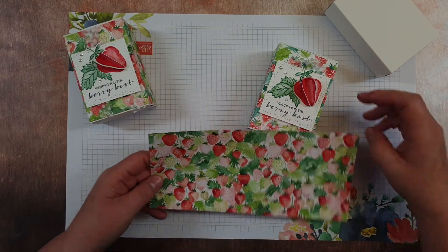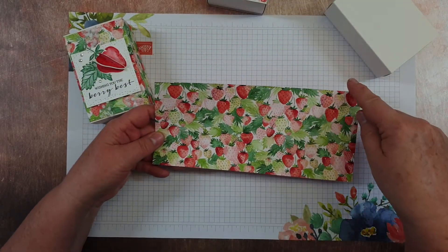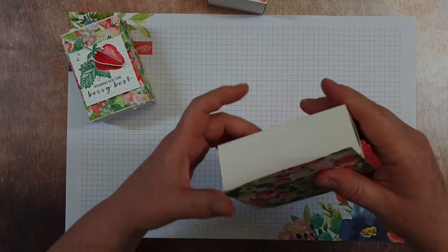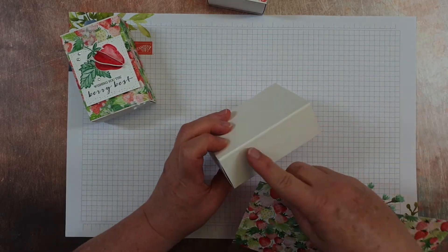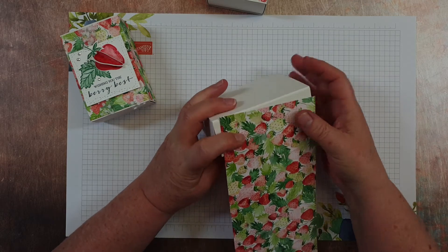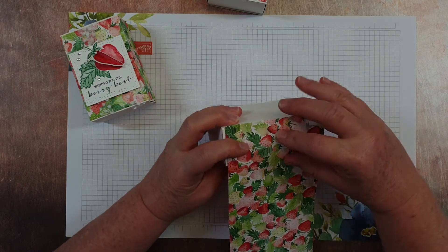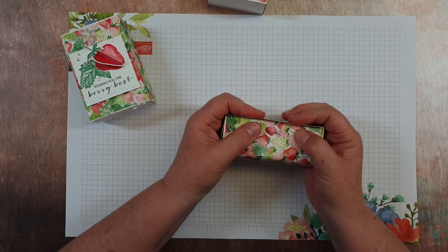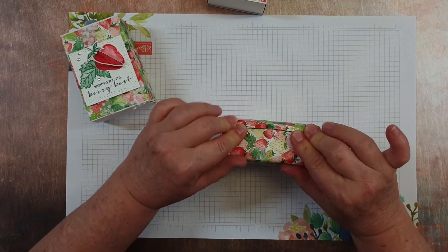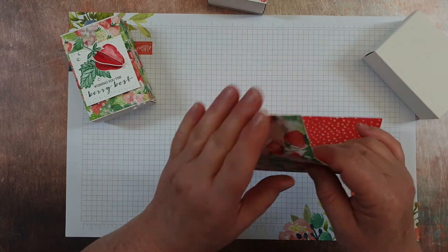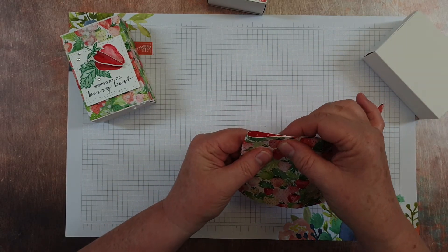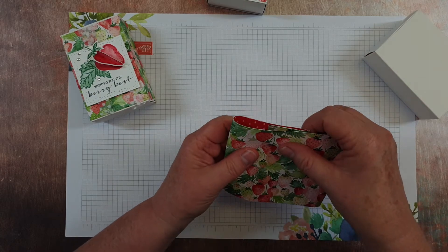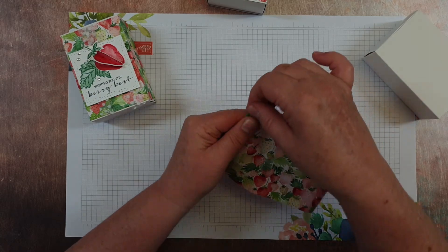So I've taken some Designer Series paper and cut it at 9 inches by 4 inches and then just starting at the side where the join is, I have just wrapped it around so I can get the idea of where it's going to crease and then crease all those down on those little lines that have been created there.